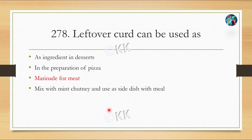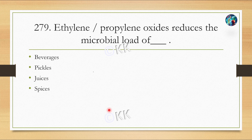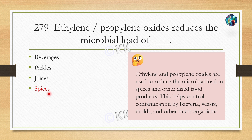Ethylene and propylene oxides reduce the microbial load of: option A, beverages; option B, pickles; option C, juices; option D, spices. The correct answer is spices. Ethylene and propylene oxides are used to reduce microbial load in spices, helping to control contamination by bacteria, yeast, and molds.